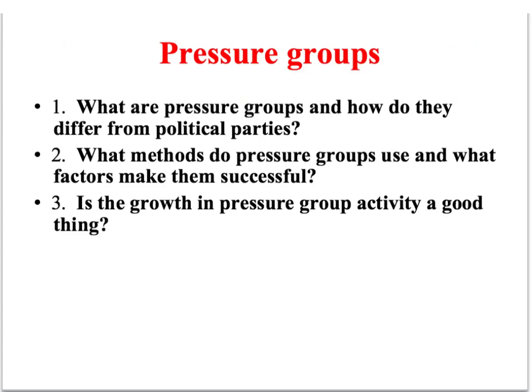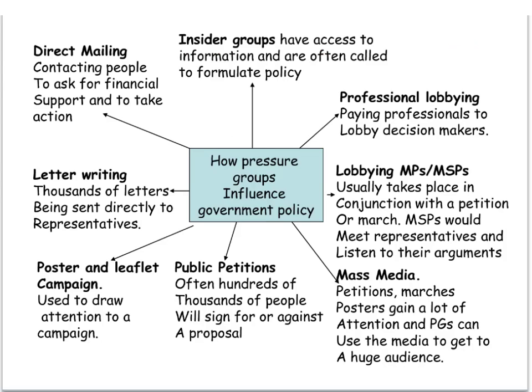Let's look at the methods pressure groups use to influence the government, before considering the factors that might make them successful. There are a range of different tactics that pressure groups might use. Insider groups often don't need to do very much because they already have regular access to the government — they have its ear and don't need to get the media on their side or mobilise public opinion. In fact, some insider groups may prefer to operate quietly behind the scenes without that type of scrutiny.